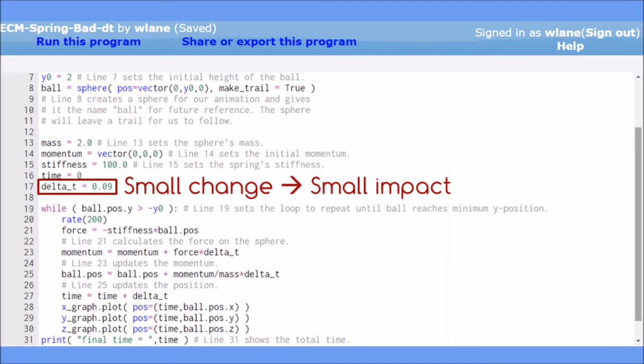Returning to the code, our next step is to decrease the step size. It usually doesn't help to decrease the step size by a small amount. For example, changing the step size from 0.1 to 0.09 won't have much of an impact on our results.